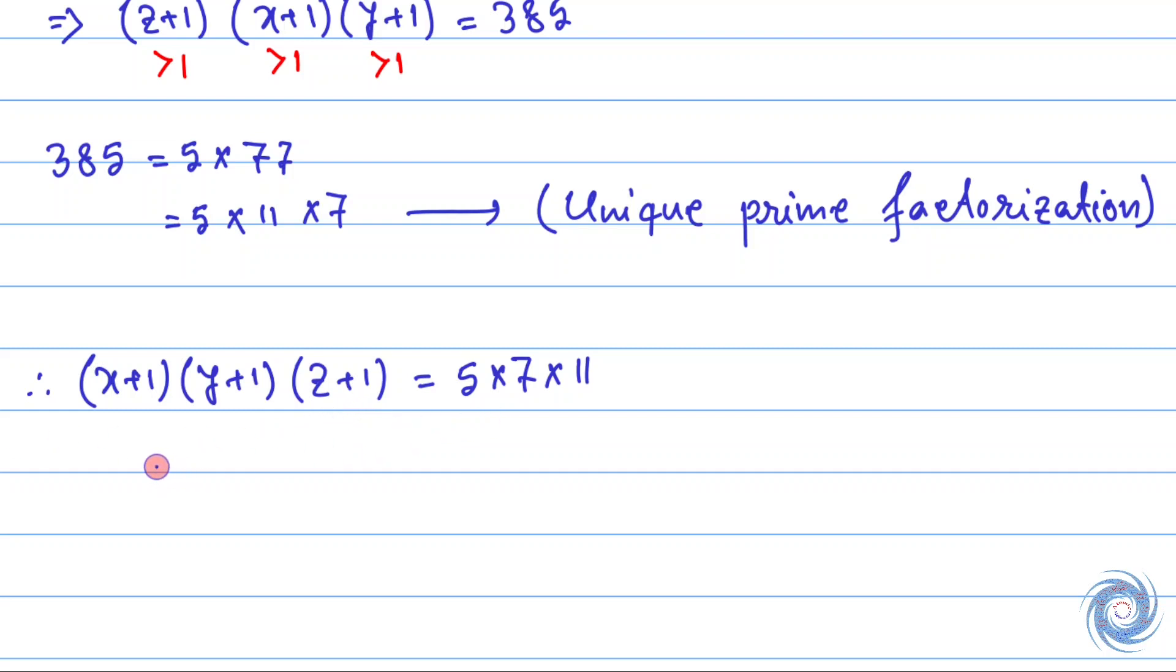We can conclude that we have 3 possible choices for the values of x plus 1: 5, 7 or 11. And similarly there are 3 possible choices for y plus 1 and also 3 possible choices for z plus 1.